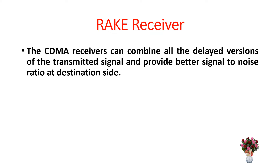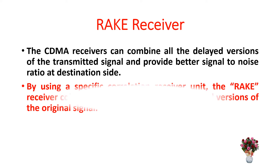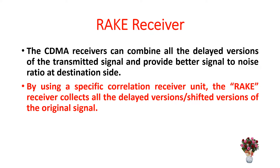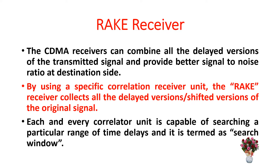The CDMA receivers can combine all the delayed versions of the transmitted signal and provide better signal-to-noise ratio at the destination side. By using a specific correlation receiver unit, the rake receiver collects all the delayed or shifted versions of the original signal. Each correlator unit is capable of searching a particular range of time delays, and this is termed as the search window.